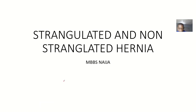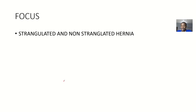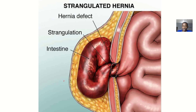Another basis for classifying hernias is whether they are strangulated or non-strangulated. For the strangulated hernia, the abdominal structures are going through there and kind of twisting on each other, so the blood supply could be occluded — blood supply to the region is cut off.